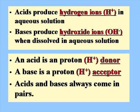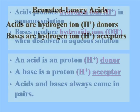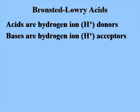A quick review of the two definitions of acids and bases: the Arrhenius definition says acids produce H+ ions and bases produce OH− ions. The Bronsted-Lowry definition says an acid is a proton donor and a base is a proton acceptor. These two definitions do not conflict with each other in any way. Acids are hydrogen ion or proton donors, and bases are hydrogen ion or proton acceptors.